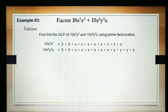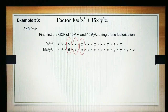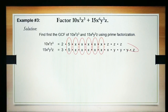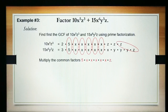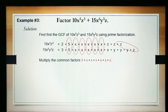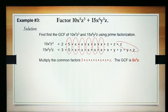Again, let's find the common factors. We have 5, x, x, x, x, x, and z. Let's multiply the common factors: 5 times x times x times x times x times x times z to find the GCF. The GCF is 5x to the 5th power z.